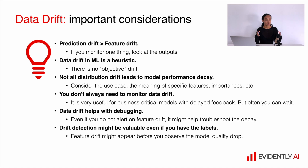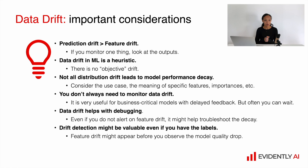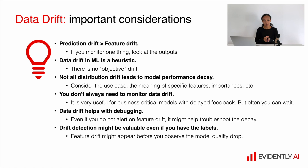Not all distribution drift leads to immediate model performance decay. For example, if you build your model on top of thousands of quite weak features, then if 2, 3, or even 10 of your features are drifting, your model will probably survive it. You don't always have to monitor for data drift — it's very useful for business-critical models with delayed feedback, but if you can calculate model quality in real time and have many other metrics, you can live perfectly without drift calculation.